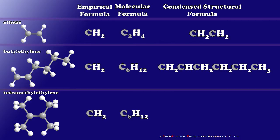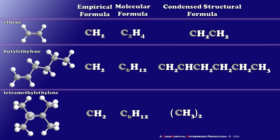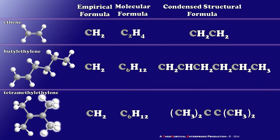Now let's see if the condensed structural formula can distinguish tetramethylethylene from butylethylene. The issue is that tetramethylethylene's carbon chain isn't straight. To convey that we have two CH3 groups connected to the same carbon, we put parentheses around CH3 and give it a subscripted 2. Then we move through the chain — a carbon with no hydrogens, another carbon, and then another set of two CH3 groups. So the condensed structural formula reads (CH3)2CC(CH3)2, allowing us to distinguish between structural isomers like butylethylene and tetramethylethylene.